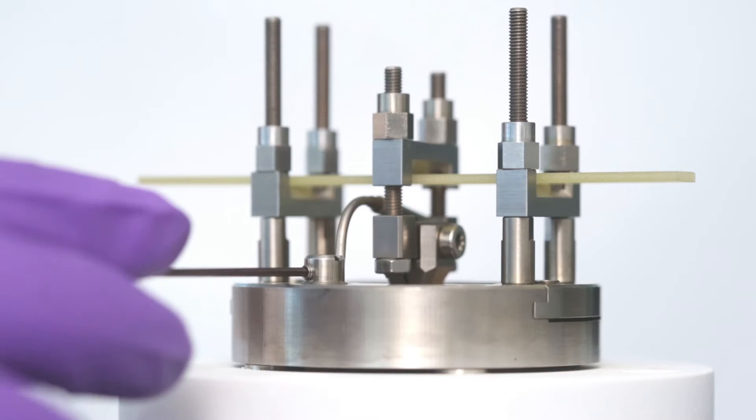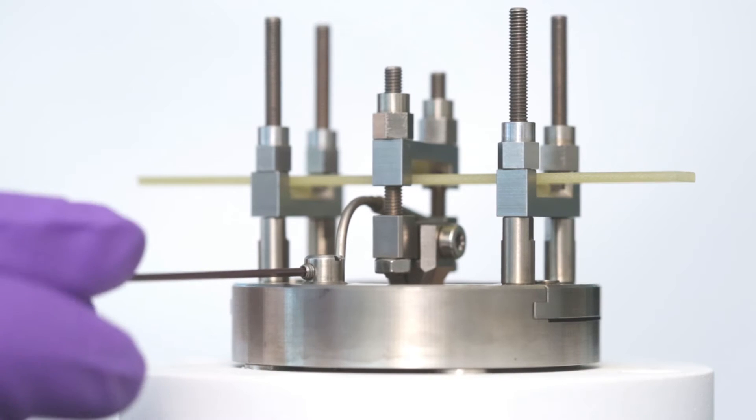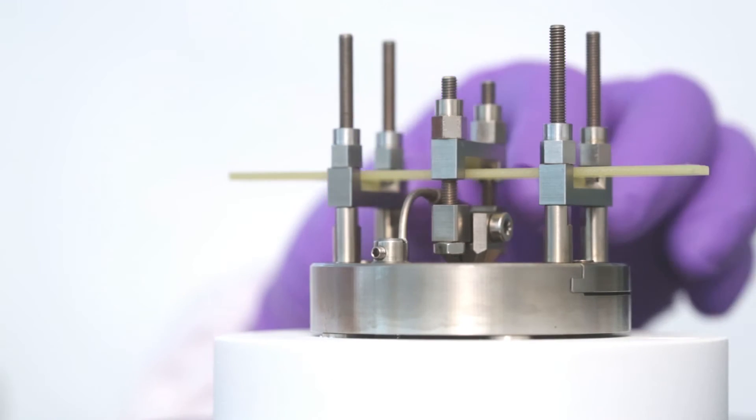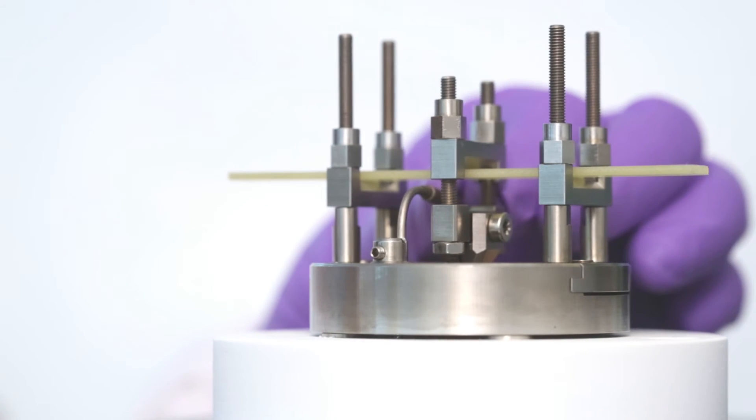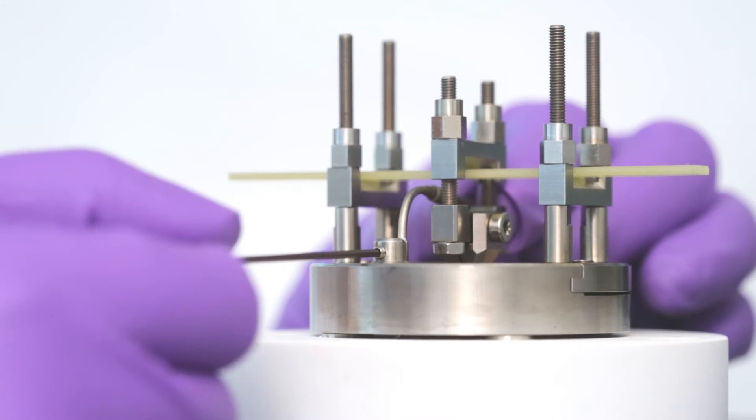Once the force has been applied, loosen the securing screw of the temperature sensor with a 1.27 mm Allen key. Position the temperature sensor as close as possible to the sample without touching it. Then, tighten the securing screw.